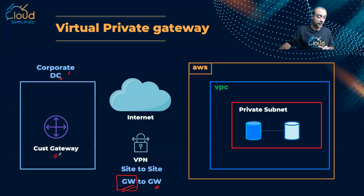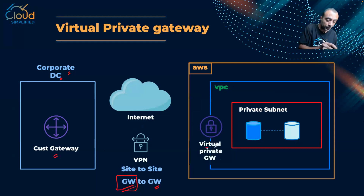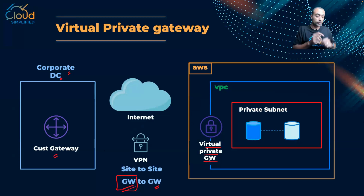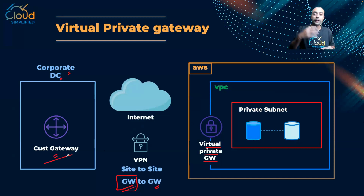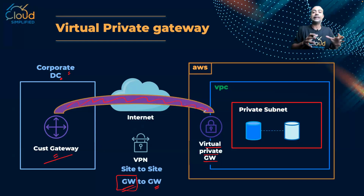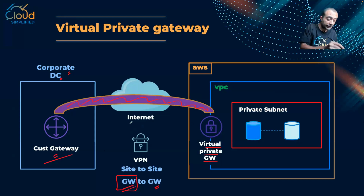The gateway from the AWS side is what we call a virtual private gateway. Since we don't have anything physical on the cloud, I need a virtual appliance to terminate my VPN connection. So the two devices in this gateway-to-gateway setup are: the physical router or firewall on the customer side, and the virtual private gateway on the AWS side. With all these components, I can establish a VPN tunnel where all data sent is completely encrypted.